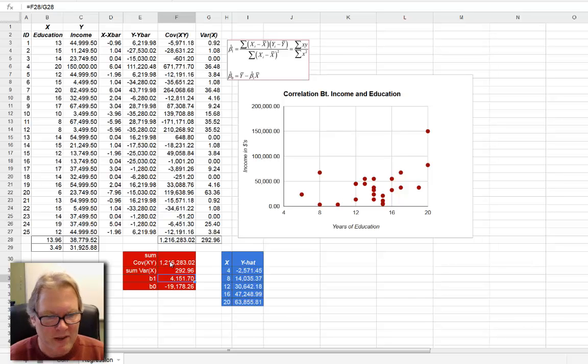And then I'm calculating beta hat sub 1, and very simply I'm taking the ratio of the covariance of x and y to the variance of x, and I'm getting my 4,151.7. Notice that this number is a little different than we got in the hand calculation, but that's because the spreadsheet is keeping greater precision. There's less rounding error as I go.